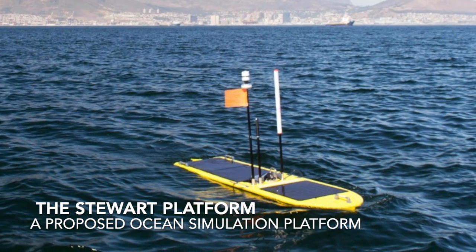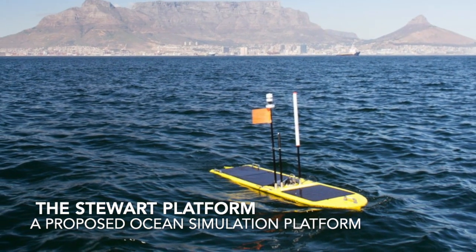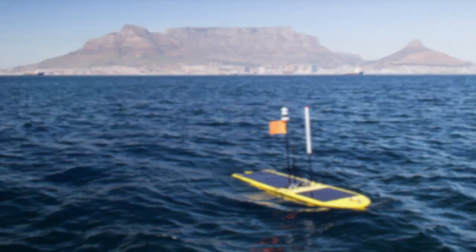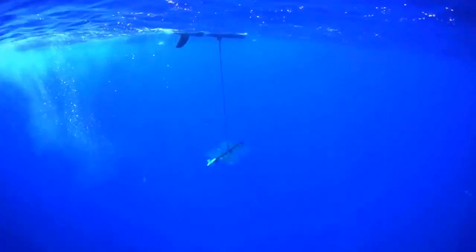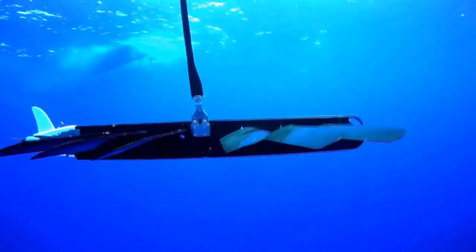Wave gliders are autonomous vehicles which operate on the ocean surface and are known for their unique propulsion mechanism which harnesses energy from the motion of waves. This allows them to be deployed out at sea for months at a time.